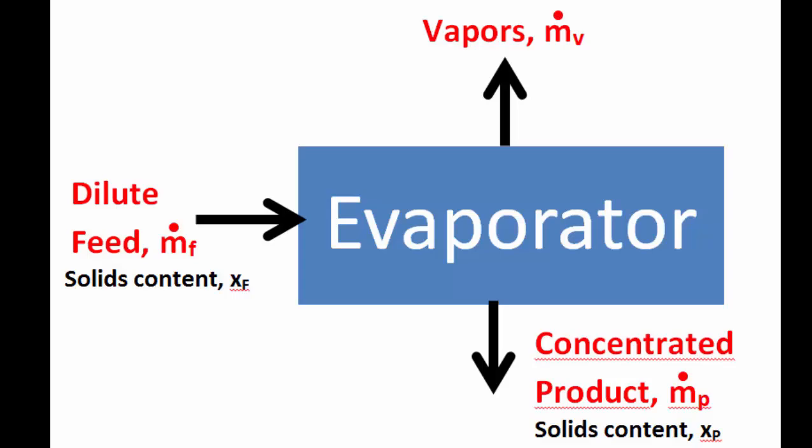if you have an evaporator, you have a certain feed, some low concentration liquid going into the evaporator where the product is heated, vapors come out, so we have vapors exiting the evaporator with a certain mass flow rate. So we can, for example, write down MF for mass flow rate of feed, MV for mass flow rate of vapors, and MP for the concentrated product.